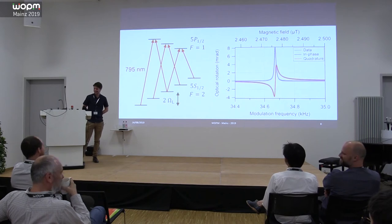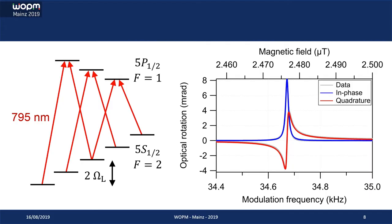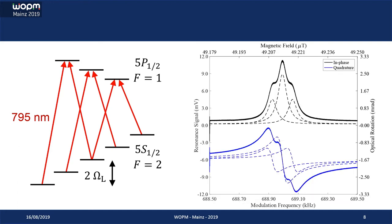The energy level diagram looks something like this, where we're generating three different coherences between ground states which are split by two Zeeman levels. We observe an oscillation at twice the Larmor frequency, which is a nice single resonance at low magnetic fields, but as we go up to Earth magnetic fields we see non-linear Zeeman splitting — broadening or splitting into three different resonances.